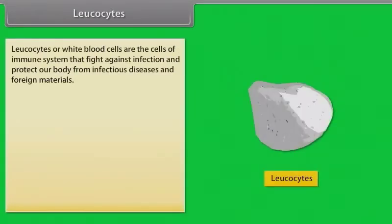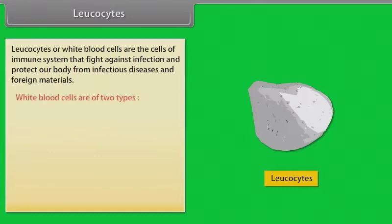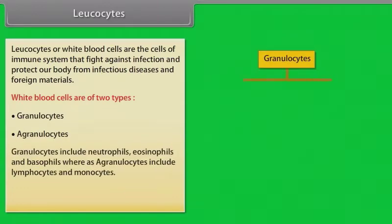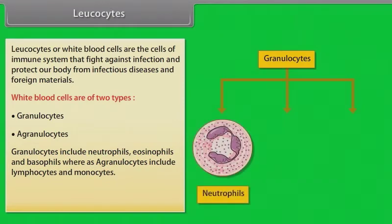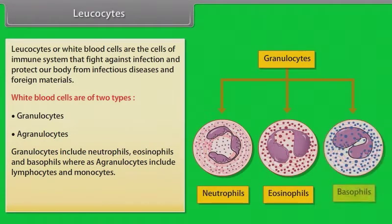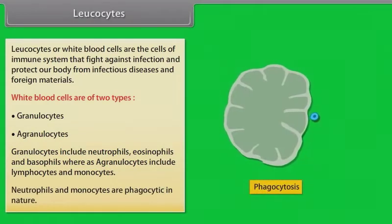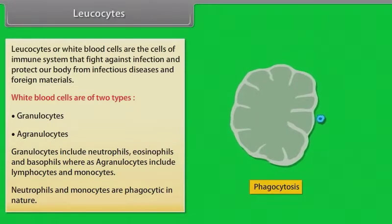Leucocytes, or white blood cells, are cells of the immune system that fight infection and protect our body from infectious diseases and foreign materials. White blood cells are of two types: granulocytes and agranulocytes. Granulocytes include neutrophils, eosinophils, and basophils; agranulocytes include lymphocytes and monocytes. Neutrophils and monocytes are phagocytic in nature.